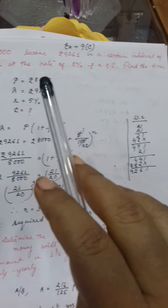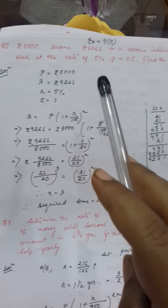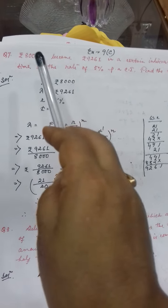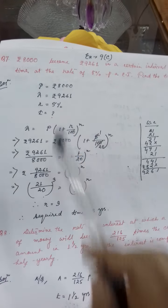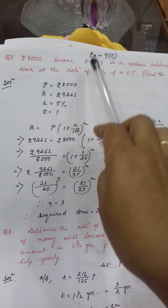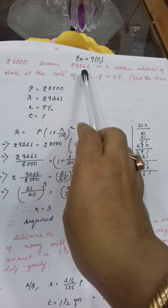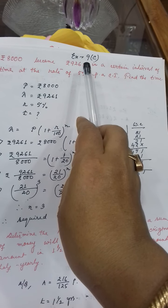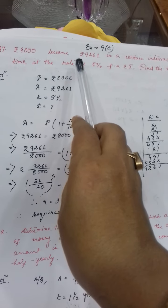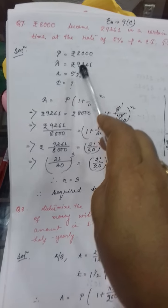Here it is given: rupees 8000 becomes rupees 9261 on a certain interval of time at the rate of 5% per annum compound interest. Find the time. Now by seeing the question you have to understand which one is the principal and which one is the amount. Rupees 8000 became rupees 9261 — 8000 is the original sum of money, that means it is the principal, and 9261 is the amount, meaning the final sum of money after considering the interest.